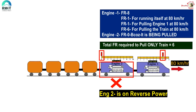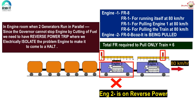In the event of any failure which calls for the engine to be stopped, that cannot happen as long as the engine is in reverse power — we are at great risk of irreversible damage. To conclude: in the engine room when two generators are running in parallel, since the governor cannot stop the engine by cutting off fuel, we need a reverse power trip where we electrically isolate the problem engine to bring it to a halt and prevent irreversible damage.